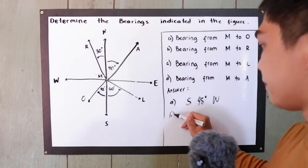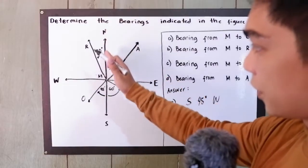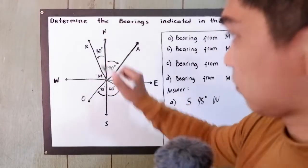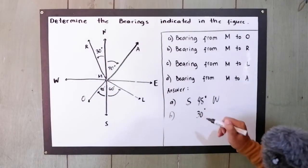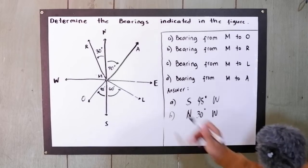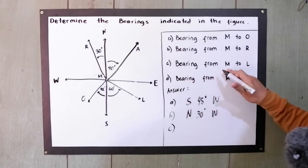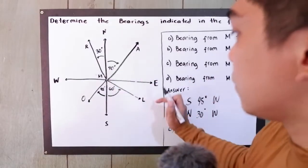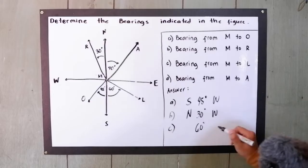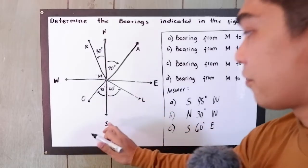Next, letter B: bearing from M to R. Locating from our vertical line, M to R is 30 degrees west of north. Letter C: bearing from M to L — that is 60 degrees east of south.